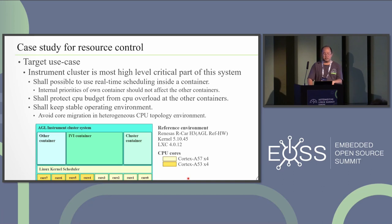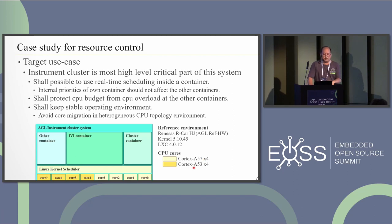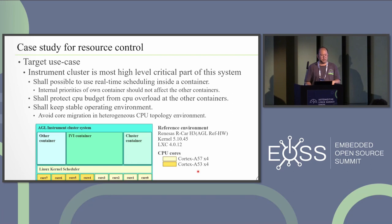This figure shows the reference environment using the Alcor 83 SoC — the AGL reference hardware. In this case, there are four high-performance cores and four low-power cores. We should assign high-performance or low-performance cores appropriately to keep a stable operating environment in this heterogeneous CPU topology.